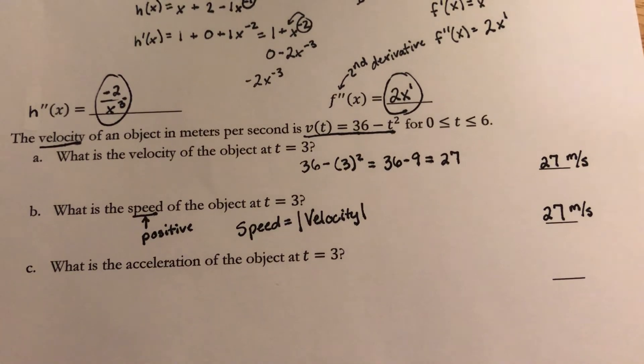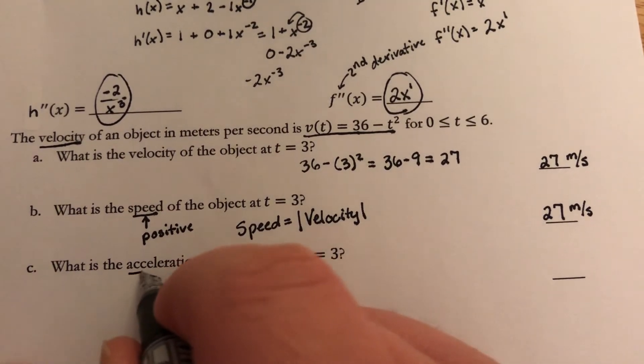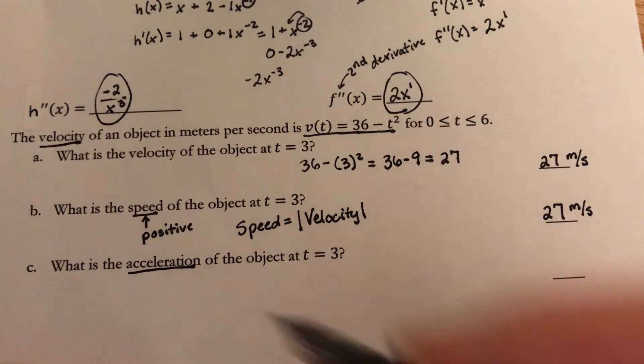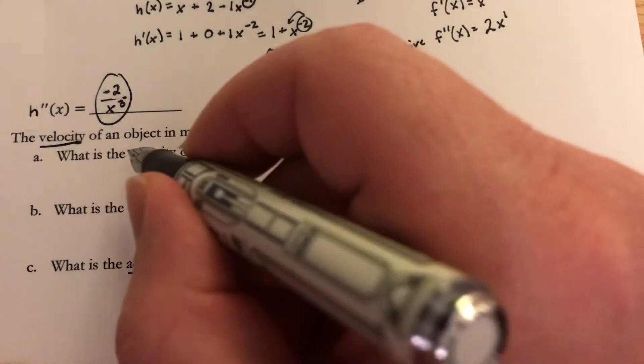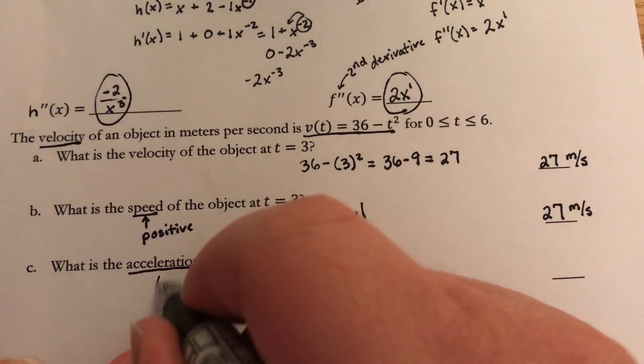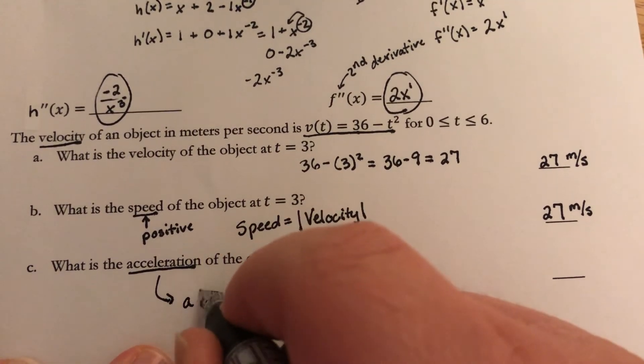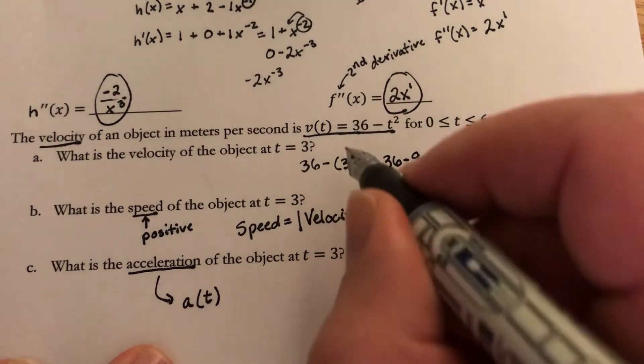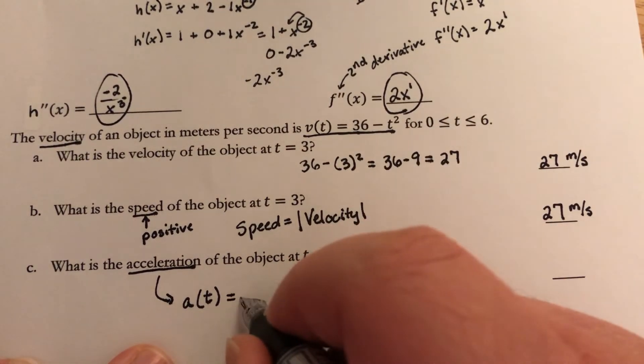Part C asks me for the acceleration. The question is, how is acceleration and velocity related to each other? Acceleration, which typically a lot of people write as a of t, is the derivative of the velocity.